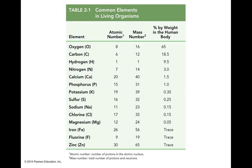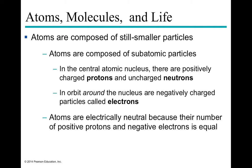Before discussing atomic number and mass, let's talk about what atoms are comprised of. Atoms are not the absolute smallest unit — they're comprised of subatomic particles shared among all atoms. Breaking atoms down further means they no longer retain the properties of the element. Those three subatomic particles are protons, neutrons, and electrons.